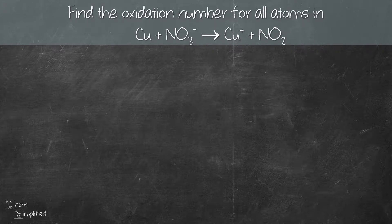When trying to balance redox equations, the first thing we'll need to do is find the oxidation number of all atoms in order to figure out the oxidation and reduction half equations.